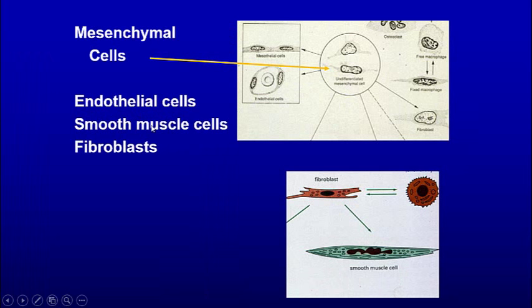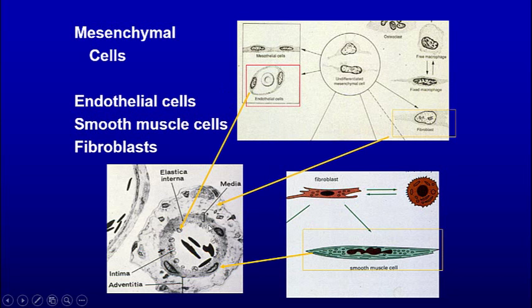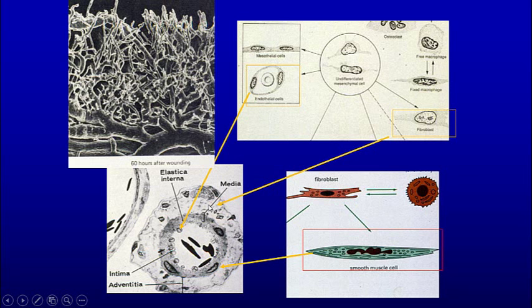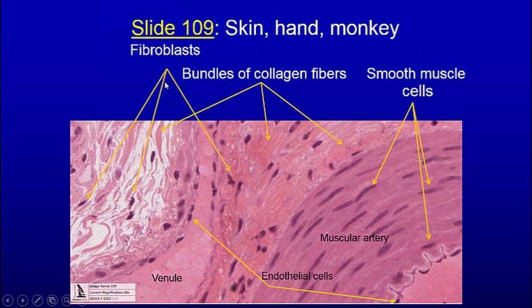Mesenchymal cells — the fibroblast-looking cells — can make endothelial cells, smooth muscle cells, and fibroblasts. That's important because it allows the mesothelial cells to give rise to new blood vessels. The blood vessels are composed of the intima — the endothelial cells — the media muscle cells, and the adventitia with fibroblast connective tissue. So in wound healing, these mesothelial cells can make all the different components of the blood vessels.